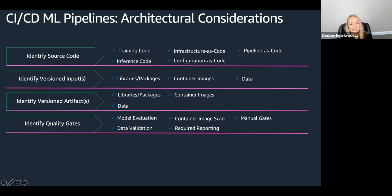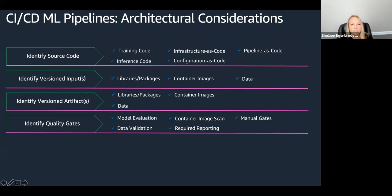Any required reporting — things like explainability reports that maybe need to be generated before a model can deploy to production. And then manual gates as well. There's continuous delivery and then there's continuous deployment. A lot of times we'll have manual gates for continuous delivery, where you want to have a checkpoint before something ultimately gets deployed to staging or production because it requires some type of manual approval, validation, peer review, or it could be tied to some type of marketing release or branding-type gate.